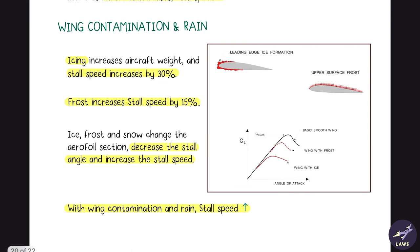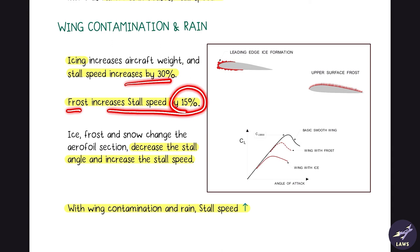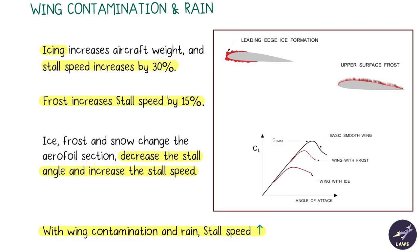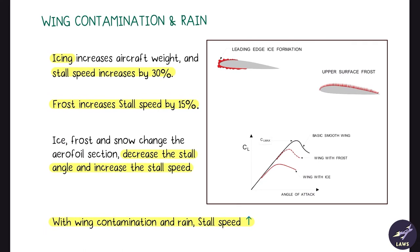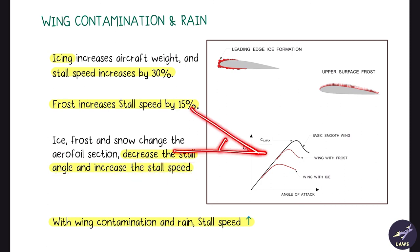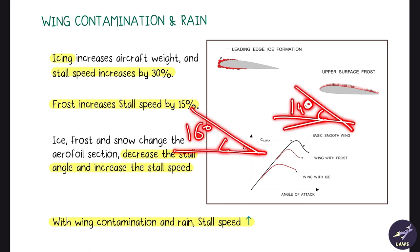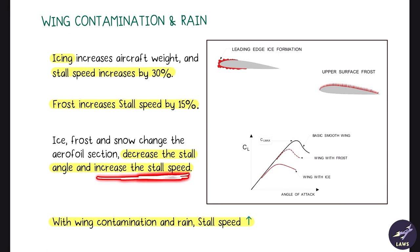Wing contamination and rain will also increase stall speed. Icing increases stall speed by 30 percent. Frost — very light icing similar to what you'd see on a cold refrigerator — increases stall speed by 15 percent. Ice, frost, and snow change the aerofoil section, decrease the stalling angle (from 16 degrees down to around 14 degrees), and increase the stall speed.